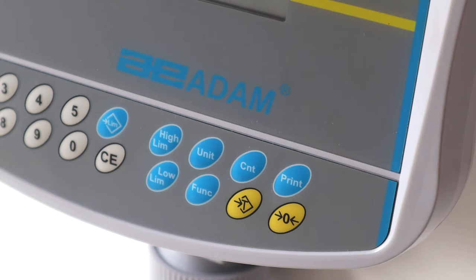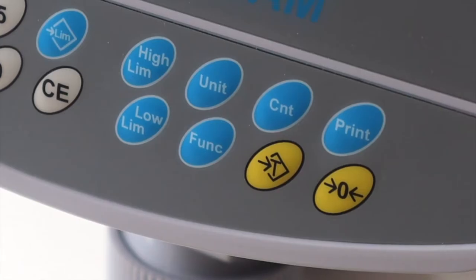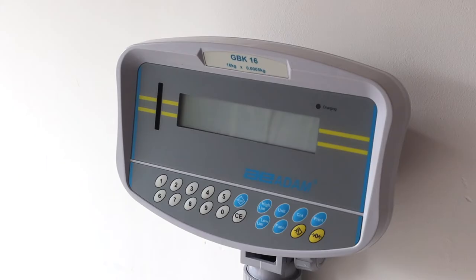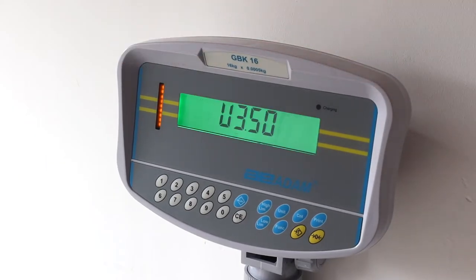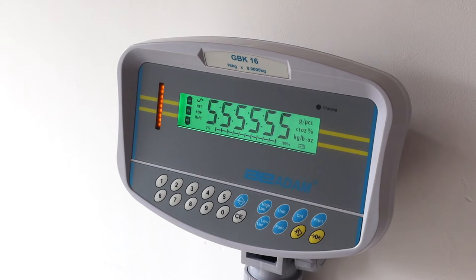Key features include check weighing, percentage weighing, accumulation and RS-232 for sending weight data to a printer or PC. When you've assembled your GBK, switch it on using the on-off button on the back of the indicator.